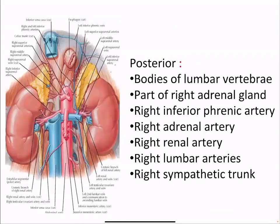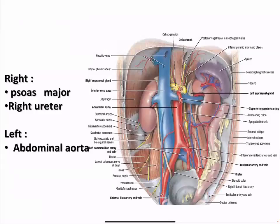Posterior relations of the IVC: bodies of the lumbar vertebrae, parts of the right adrenal gland, right inferior phrenic artery, right adrenal artery, right renal artery, right lumbar arteries, and the right sympathetic trunk. To the right of the IVC we can see the right psoas muscle and the right ureter. To the left of the IVC we can see the abdominal aorta.